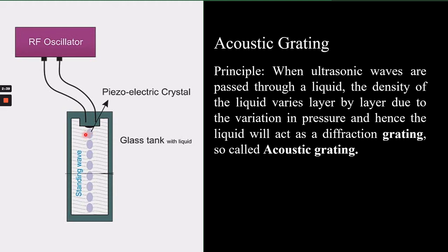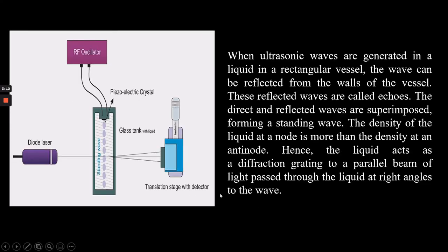Over the standing wave, the node portion has greater density of liquid due to rarefaction, and the antinode portion has lesser density due to compression. The alternating nodes and antinodes create opaque and transparent regions respectively. The node portion acts as an opaque region where density is more, and the antinode portion acts as a transparent region where density is less. So when this standing wave in the liquid cell is illuminated with monochromatic light perpendicular to the propagation direction of the ultrasonic waves, this liquid cell acts like a diffraction grating — hence it is called acoustic grating.